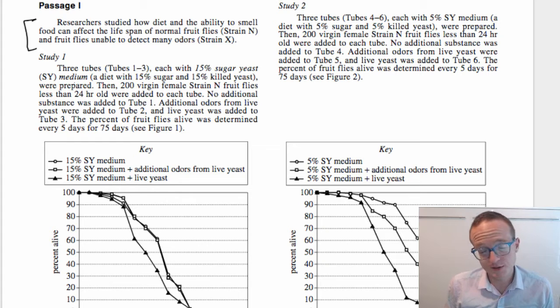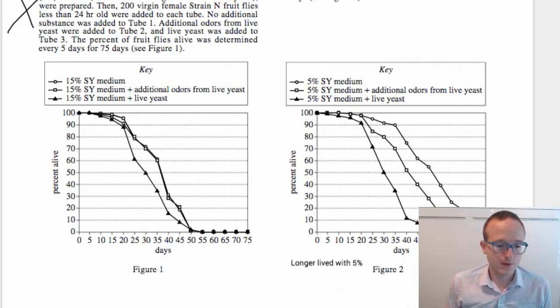So immediately we get that N is normal, strain X is not able to smell. I usually skip this study description. At some point we're going to need to probably come back and check this out, but you can get really far without even reading any of this stuff.